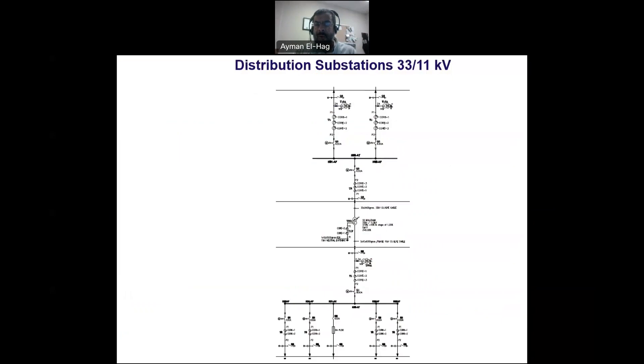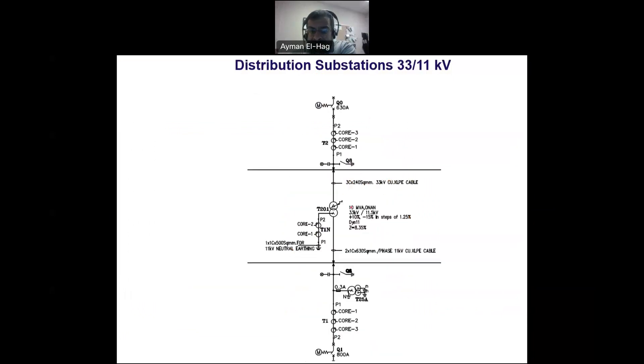Let's move now to the transformer, which is between the 33 and the 11 kilovolt side. This is a 10 MVA transformer. ONAN means oil natural, air natural, meaning that the circulation of the oil inside the tank is done naturally, and the air around the transformer also circulates naturally.